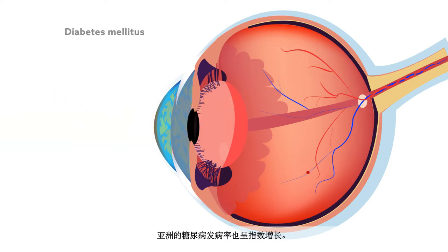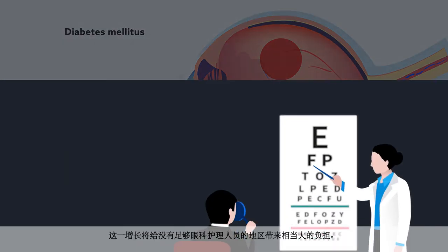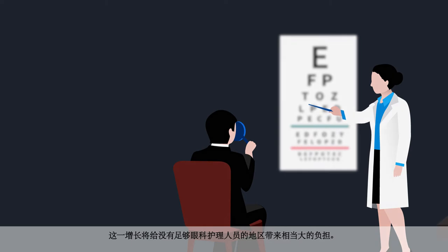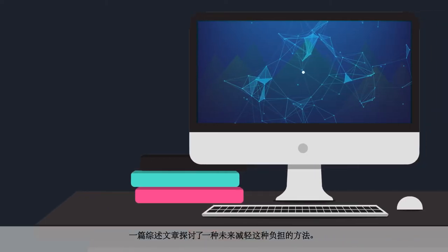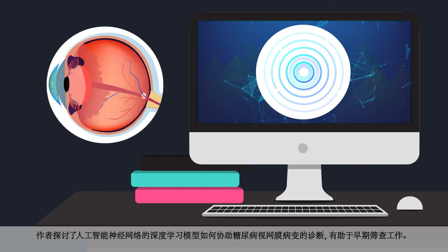Asia has also seen an exponential increase in the incidence of diabetes mellitus. As a result, the demand for screening of diabetic retinopathy is expected to rise. This increase will put a considerable burden on areas that don't have sufficient eye care providers. One review article looks at a futuristic approach to managing that burden — examining how deep learning models with artificial intelligence neural networks can help in the diagnosis of diabetic retinopathy, which could aid early screening efforts.